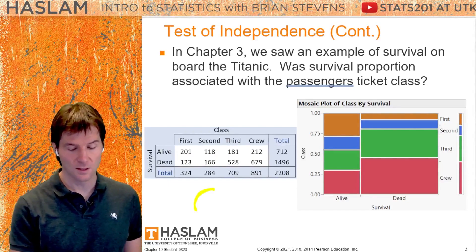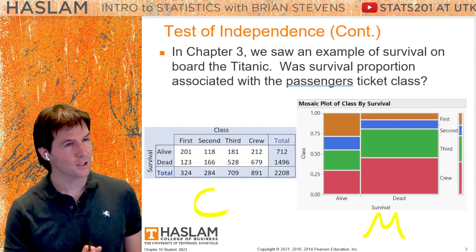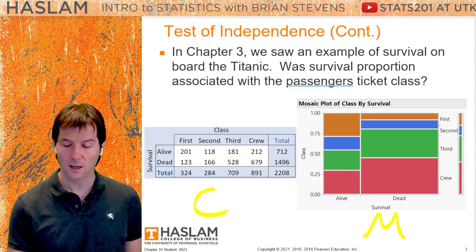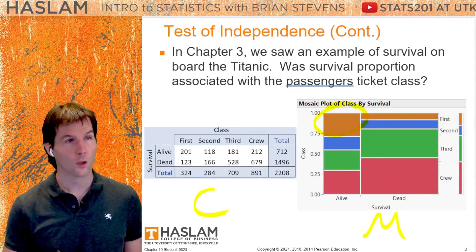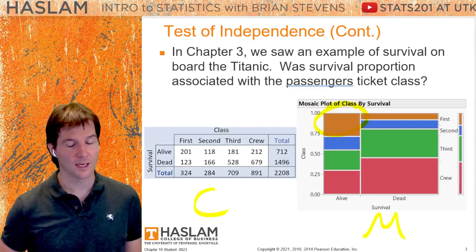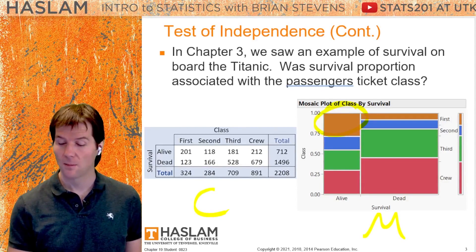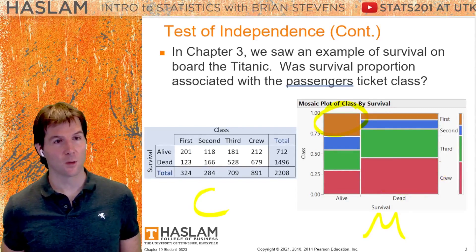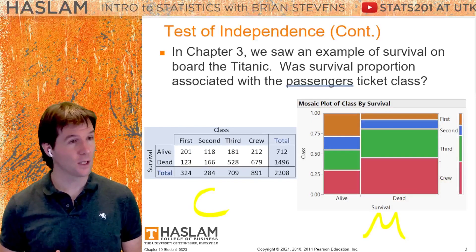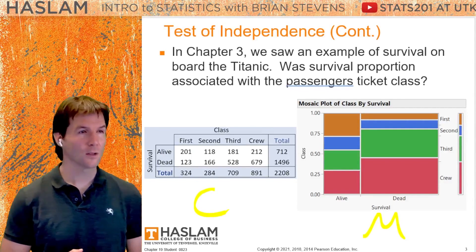This is the contingency table, and this is the mosaic plot. You can actually tell very quickly that of the people who were alive on the Titanic, more were in first class. Of the people who were dead on the Titanic, more were in the crew. The contingency table lets us look at the counts of observations, so we can compare the counts.